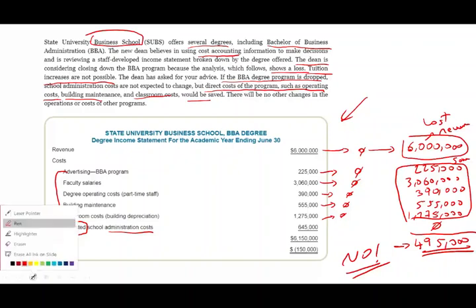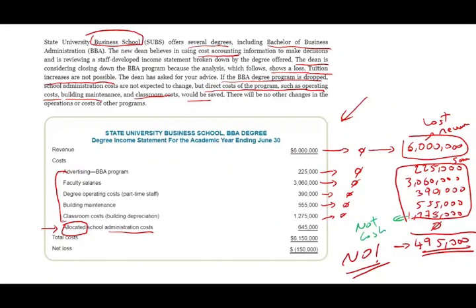In addition, depreciation is not cash. We are deducting 1,275,000 and we really don't pay depreciation in cash — that's part of our capital assets, our fixed assets; it just gets depreciated. So based on these figures, the recommendation is we are better off keeping the business school. Although it's showing a loss, it's not really a loss. The reason it's showing a loss is because of this allocated number, and also because we are assuming we can remove all these expenses — which we may or may not be able to do.